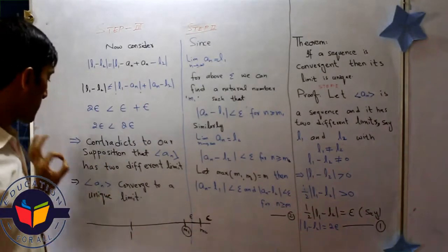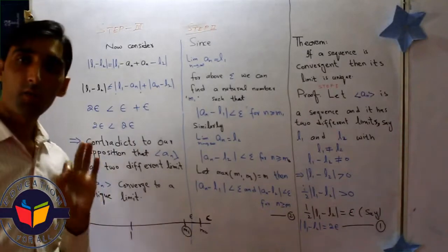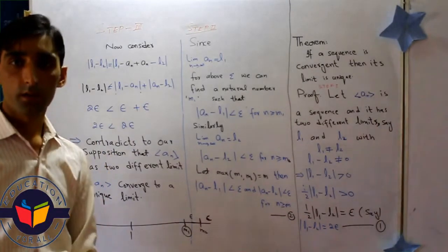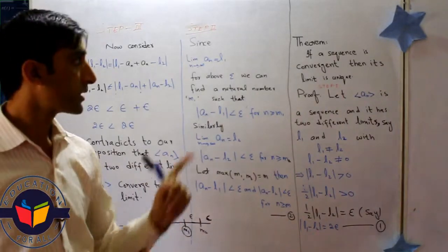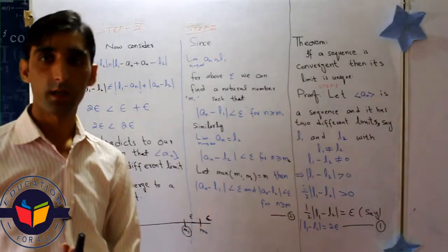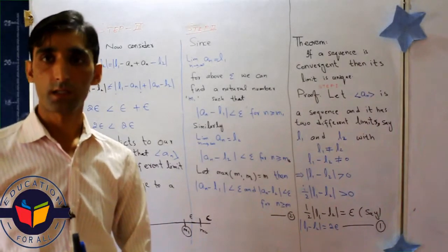It means that a_n is convergent and it has only one limit. Okay students, this one is the lecture about real analysis and this theorem. Thank you very much for watching Education for All.